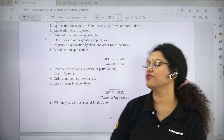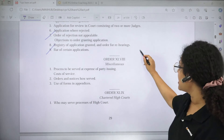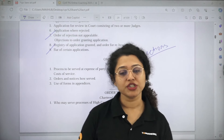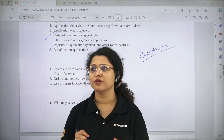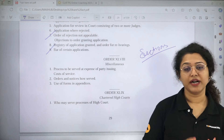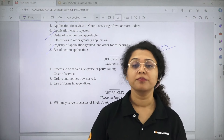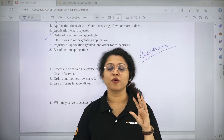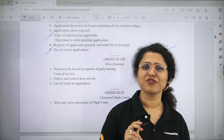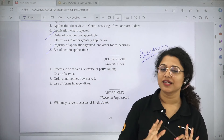Orders 48, 49, and 50 — you can remember the names if you want. So when we talk about CPC for the purpose of CUET PG LLM exams, the sections are very important. I have told you the important sections and orders — just remembering the names of orders is sufficient. Some rules are important and I have marked those, which are not more than 10 to 15 rules. There are chances of 4-5 questions from CPC, or there may be only one or two. Since we can't leave it, I have kept it very brief with very few sections and rules to read.